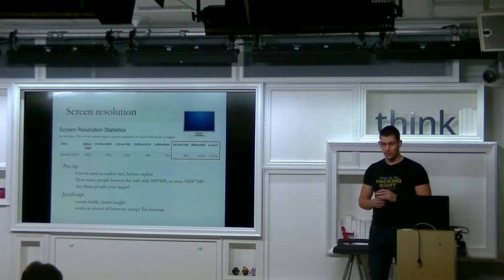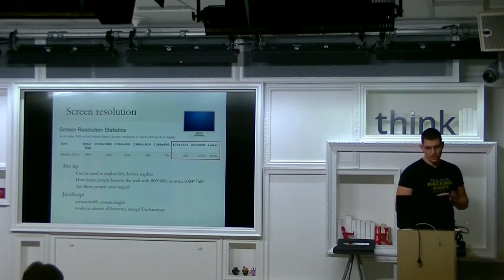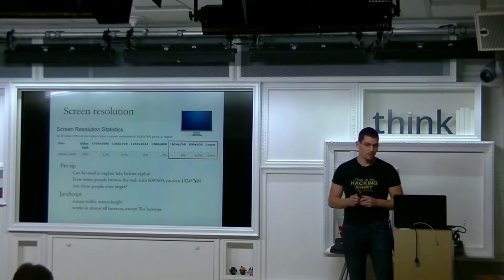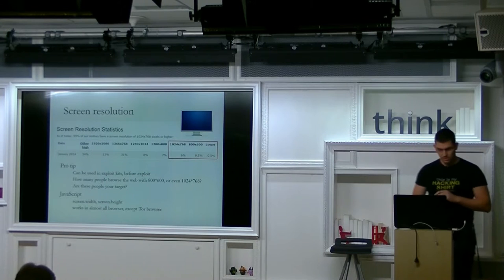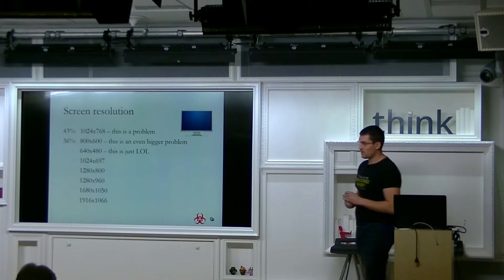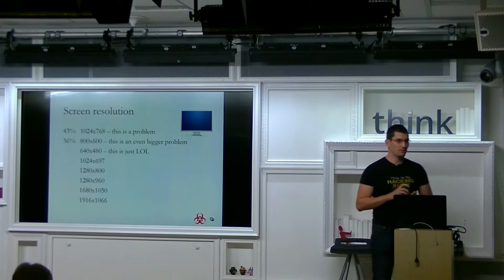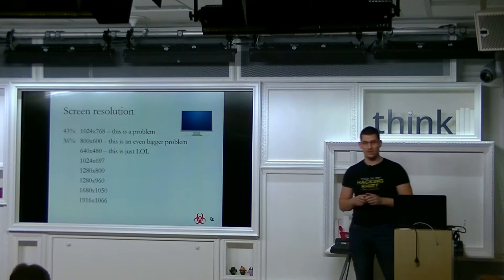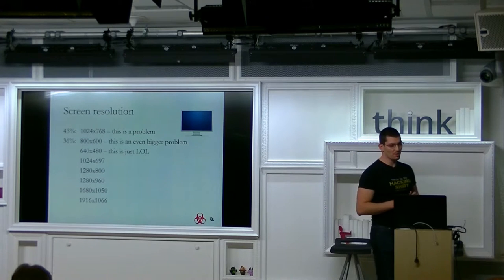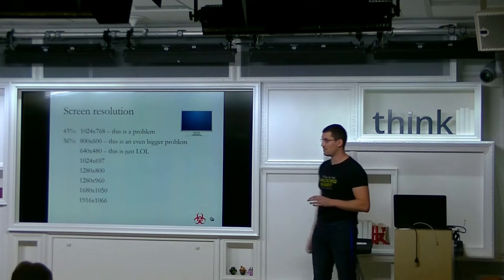The first one was the screen resolution. And here you can see a statistics from a browser statistics company. And as you can see, it's around 7% of the users on the internet who are using 1024 by 768 screen resolution or lower. But let's see the sandboxes. 43% used this kind of resolution and 36% used the 800 and 600 resolution, which is a big problem. But there was even some one sandbox with 640. And I mean, they didn't even try to hide this is a malware analysis sandbox.